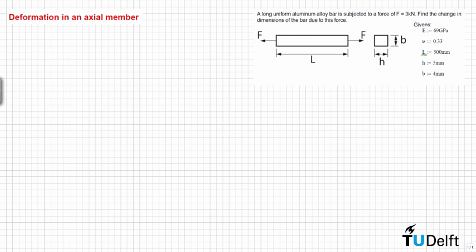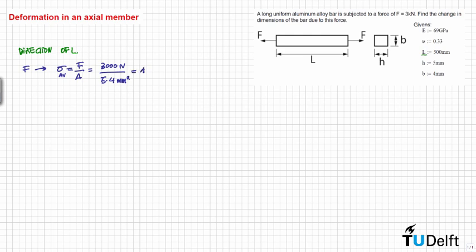Calculating this change in dimensions in the direction of L: we know that the internal force is equal to F. Then the average internal stress is equal to F divided by A. This is equal to 3 kN divided by the area, which is 5 times 4 mm squared. Then this is equal to 150 MPa.